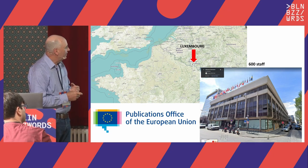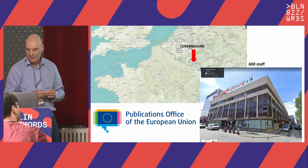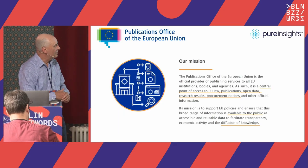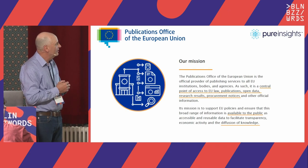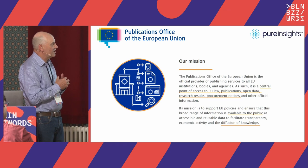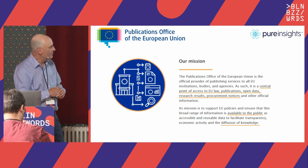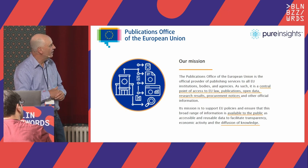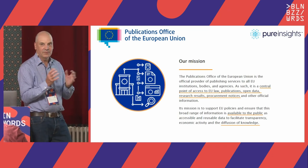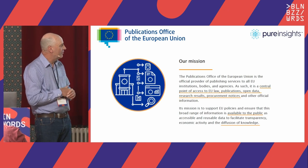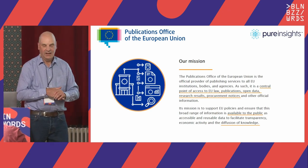The Publications Office of the European Union is based in Luxembourg with around 600 staff. They manage all publications within the EU agency and serve as a central point of access, with a portal allowing people to search for different types of data and datasets. They ensure a broad range of information is available to the public, supporting transparency and the diffusion of knowledge so people can access, analyze, and use that information.